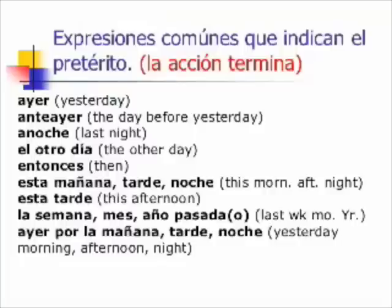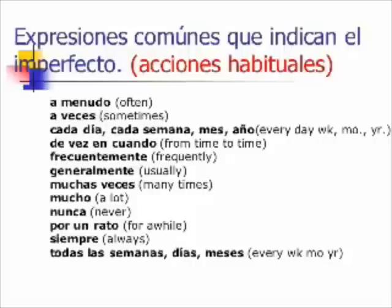Here's a list of expressions that indicate the preterite. If the video quality doesn't allow you to copy these down, go to the Blackboard website under Notes and print them out. You should be familiar with them and recognize them as keywords that trigger the preterite — they indicate that the action has started and finished, and we more or less know when it took place. Here are also key expressions that indicate the imperfect — you can see that these are all actions that take place over and over again.